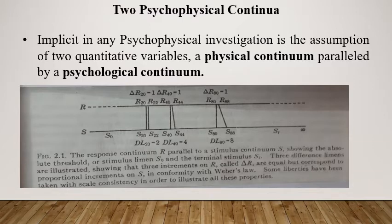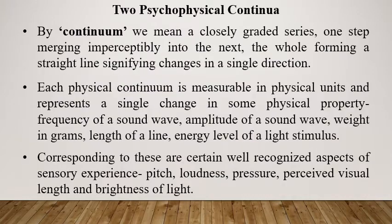In any psychophysical investigation, the assumption is that there are two quantitative variables. There is always a physical continuum, and parallel to it there is a psychological continuum. By continuum we mean a closely graded series — one step merging imperceptibly into the next, with no gap, forming a straight line signifying changes in a single direction.